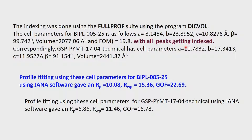The other compound was also taken up using the same package, the same machine, and the same conditions. We find that the cell parameters are different and the volume is 2441. The two volumes are different, and of course the cell dimensions and beta are different. So, do you conclude that it is a polymorph?